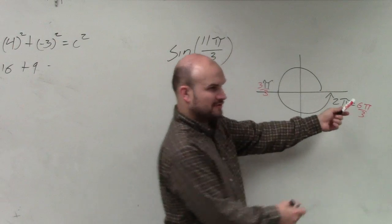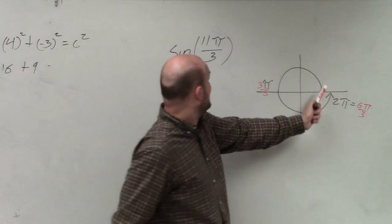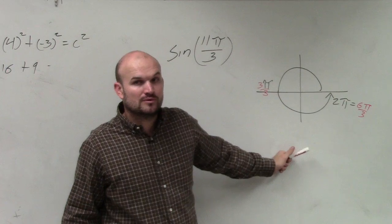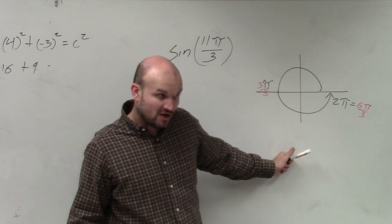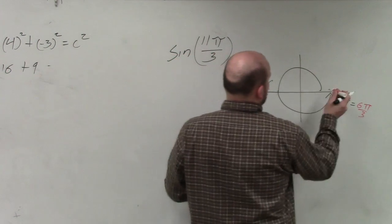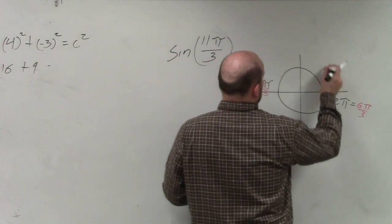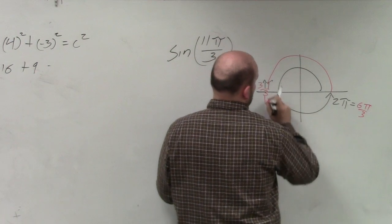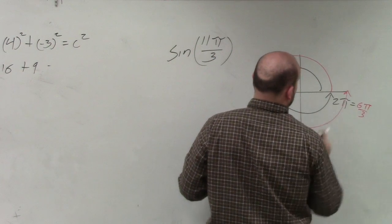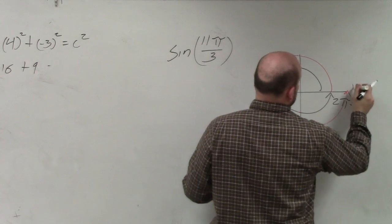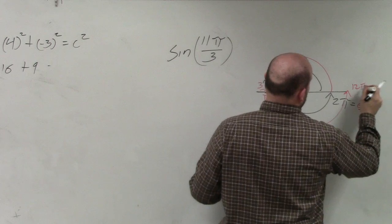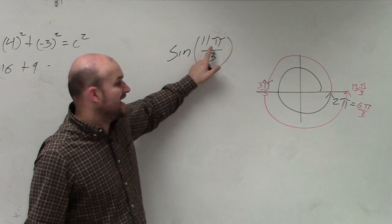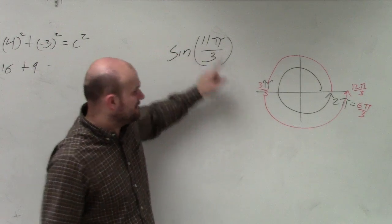If I go all the way around, that's 6 pi over 3. If I go all the way around again, that would give me 12 pi over 3. That is 12 pi over 3 — so that's pretty close. But they're saying the angle is 11 pi over 3.